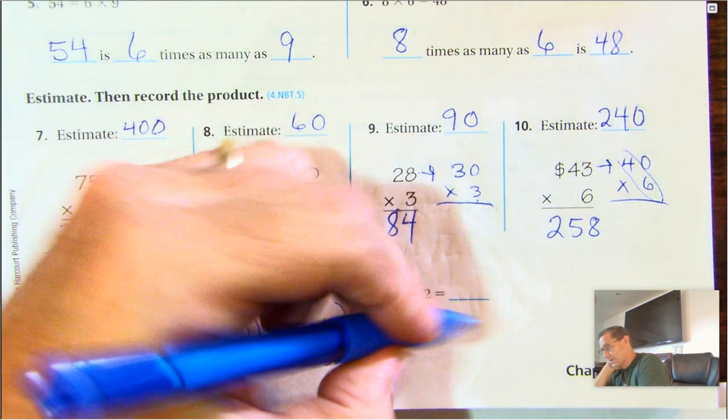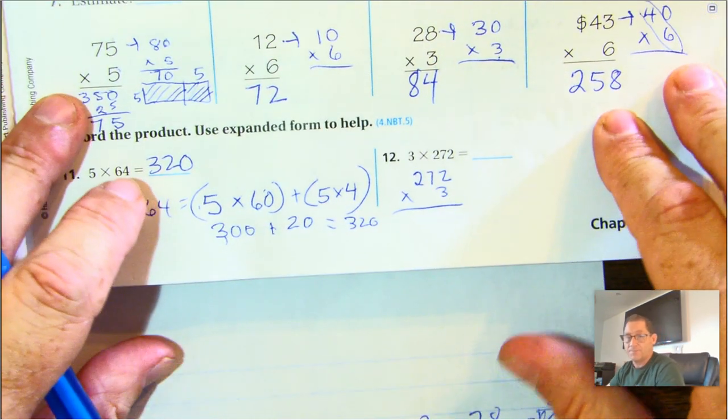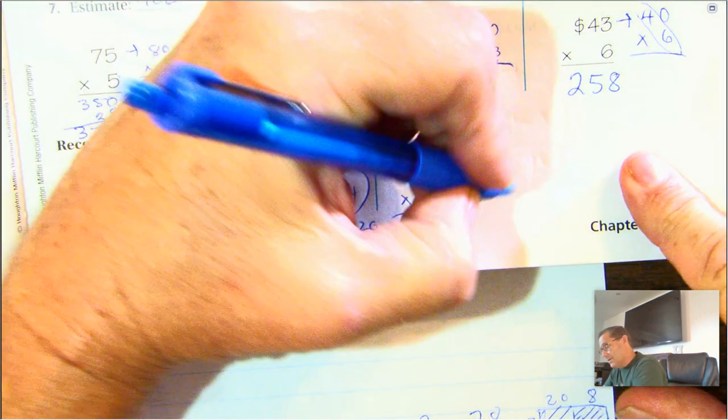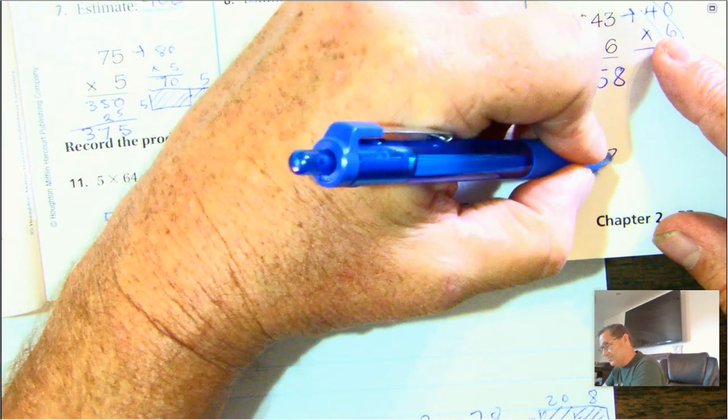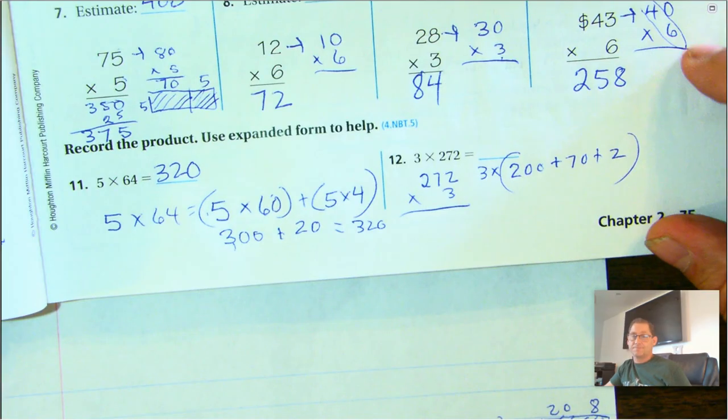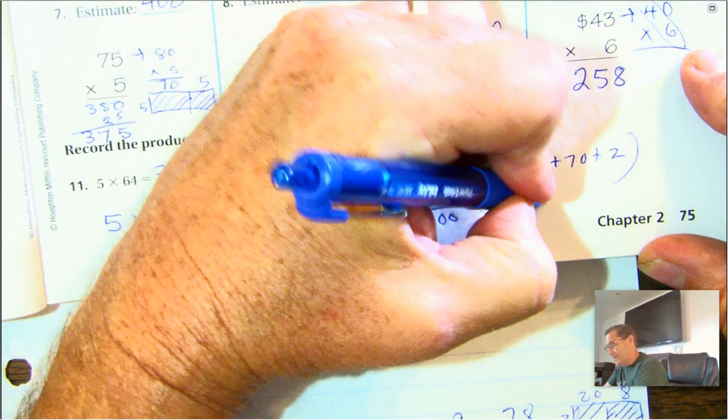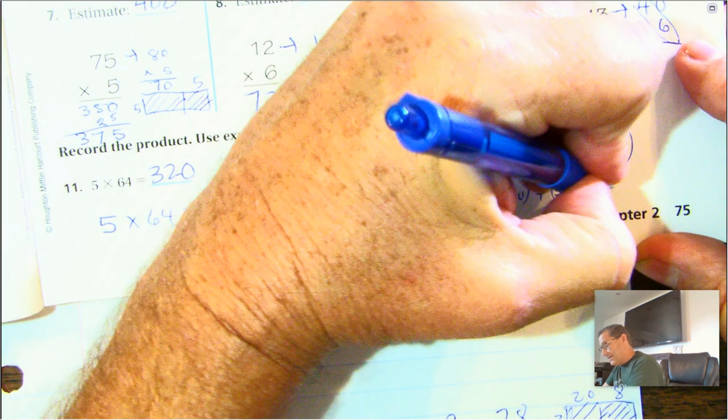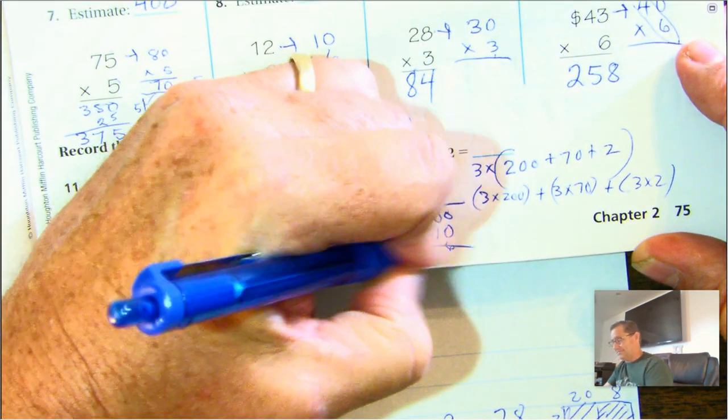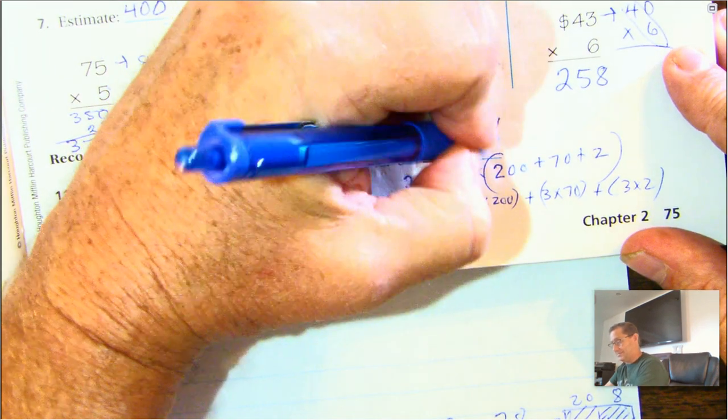Number 12. I'm going to rewrite it this way. Just so then it looks like the problem we've been practicing. We're going to put the larger factor on top, and we're multiplying by 3. So now we're going to break apart 272 as 200 plus 70 plus 2, and we're multiplying that all by 3. So 3 times 200 is 600. 3 times 70 is 210, and 3 times 2 is 6. Add those all together. We get 6, 1, 8. 816 for our answer.